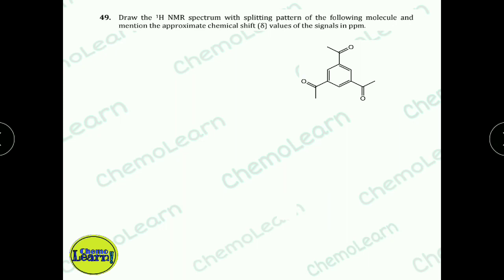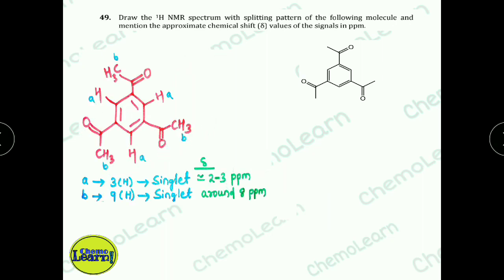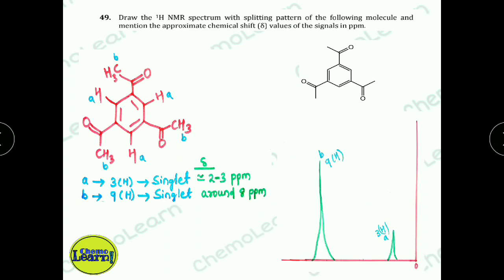Next question: Draw the H1 NMR spectrum with splitting patterns and mention the appropriate chemical shift values in ppm for the given molecule. The compound gives two types of hydrogens: type A is benzene ring hydrogens directly attached, and type B is the OCH3 group hydrogens. Type A has 3H and type B has 9H. Since there are no adjacent C-H protons for coupling in either case, both signals are singlets. Type A appears at 2–3 ppm and type B appears around 8 ppm due to the electron-withdrawing group causing downfield shift. The intensity of type B signal is about 3 times greater.